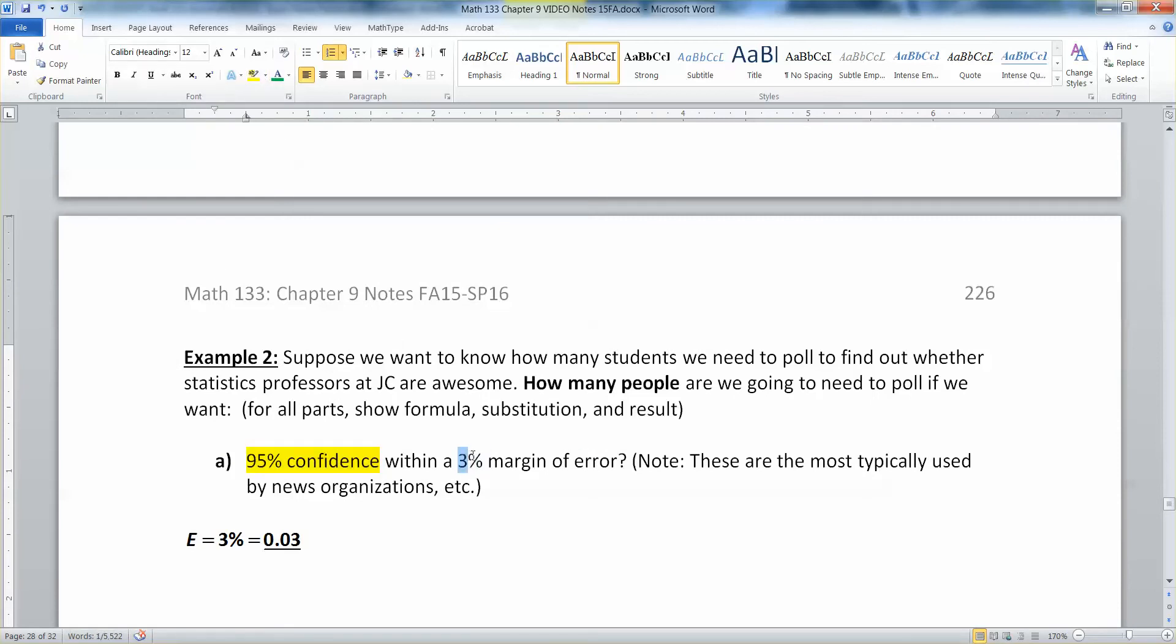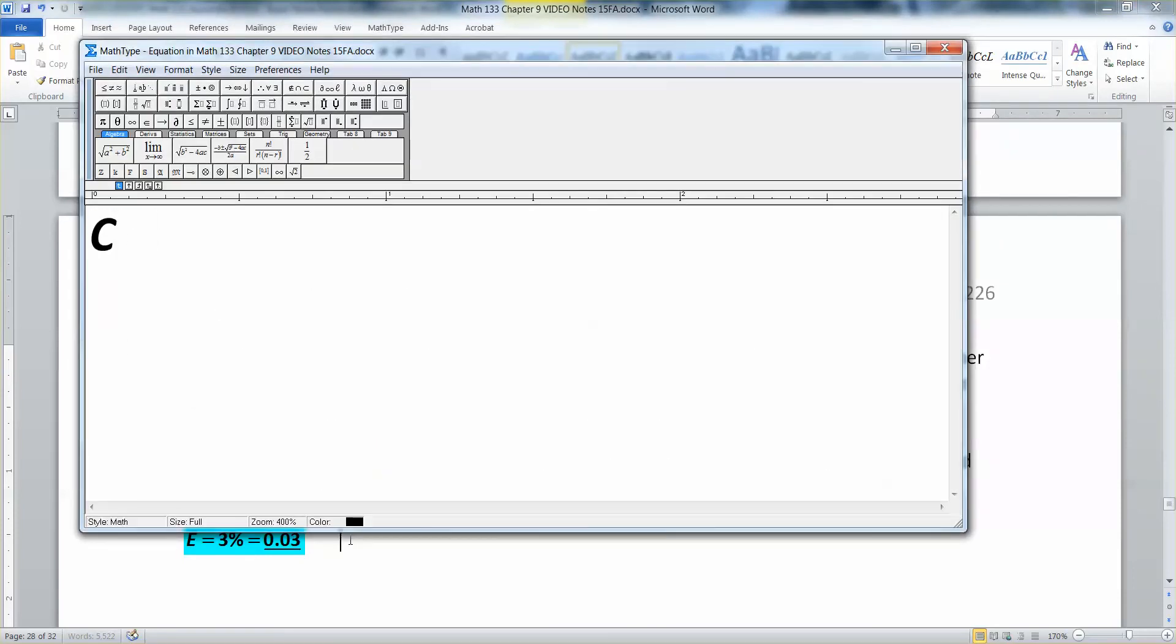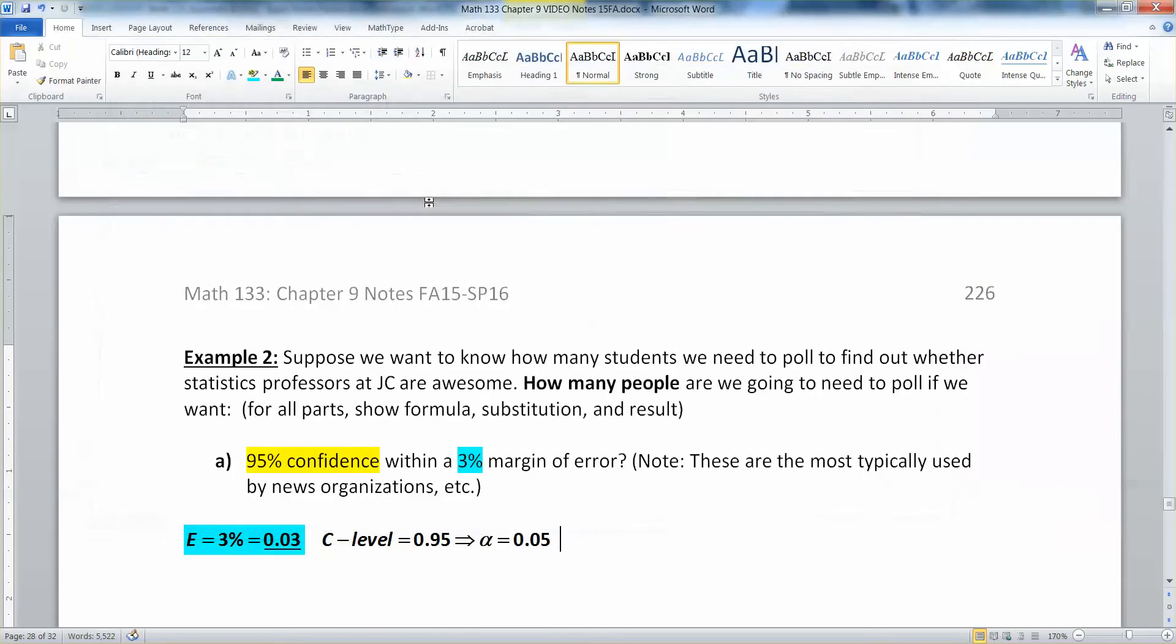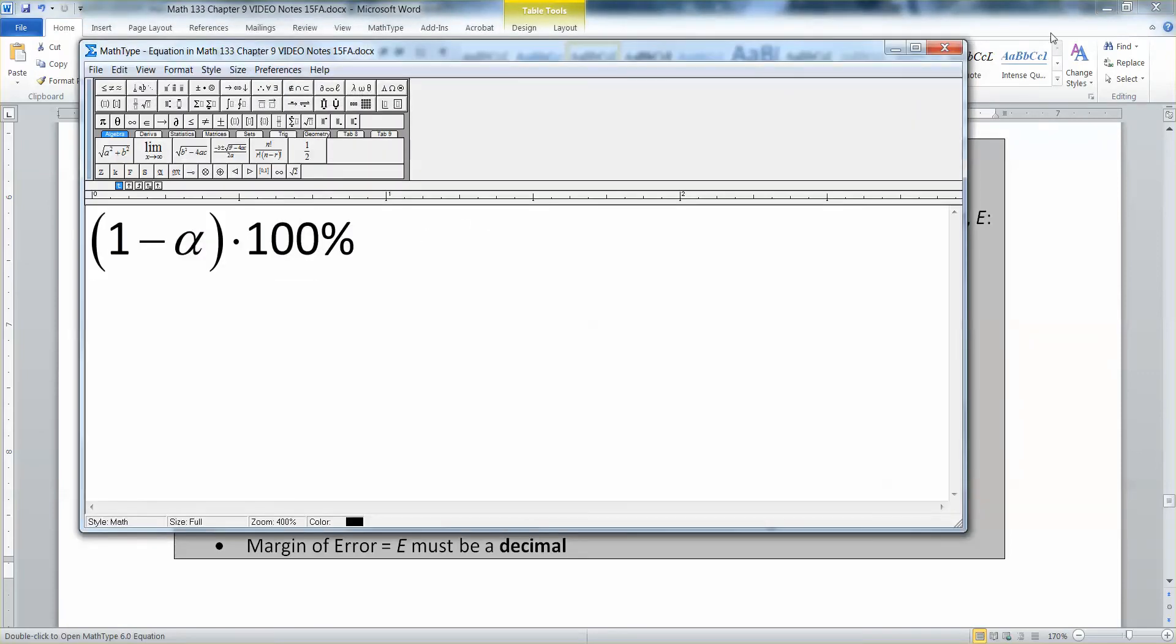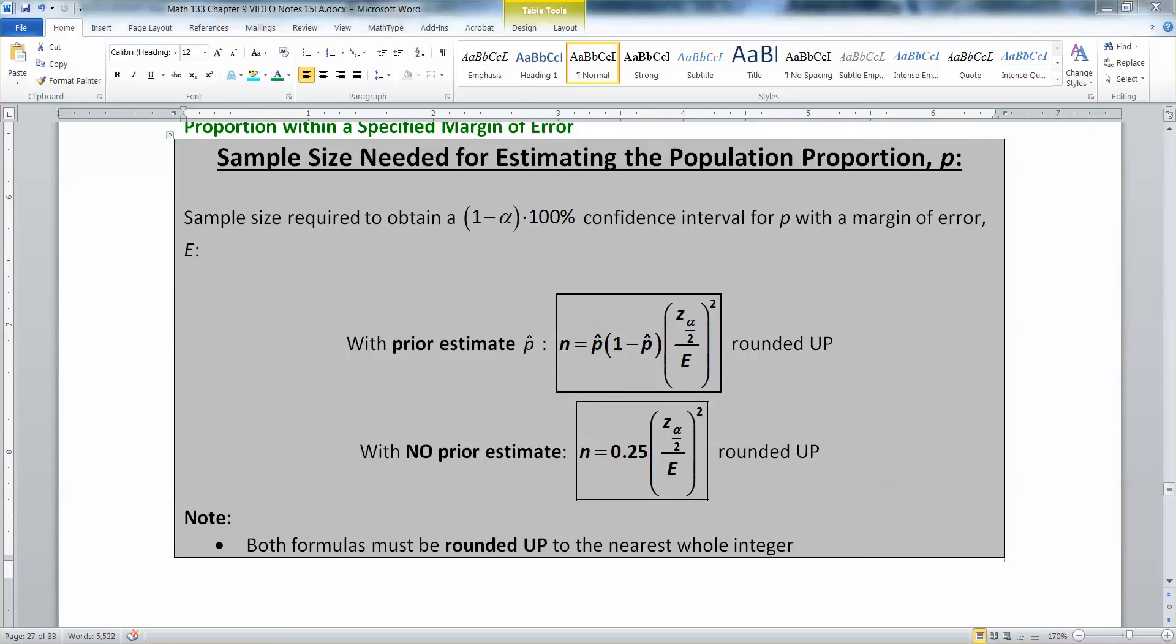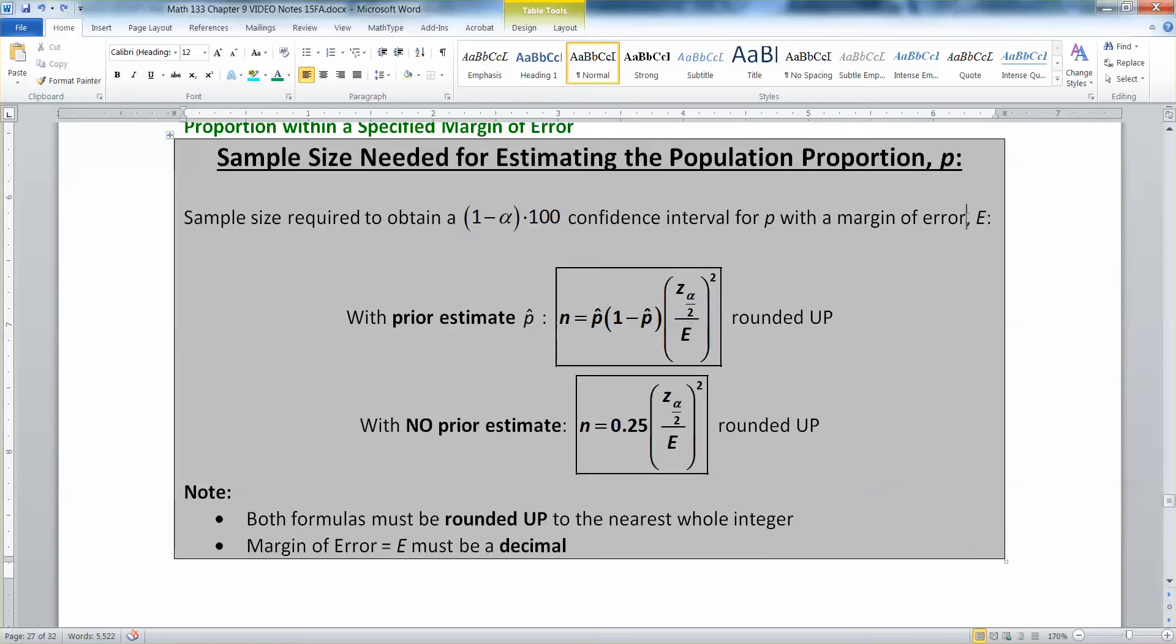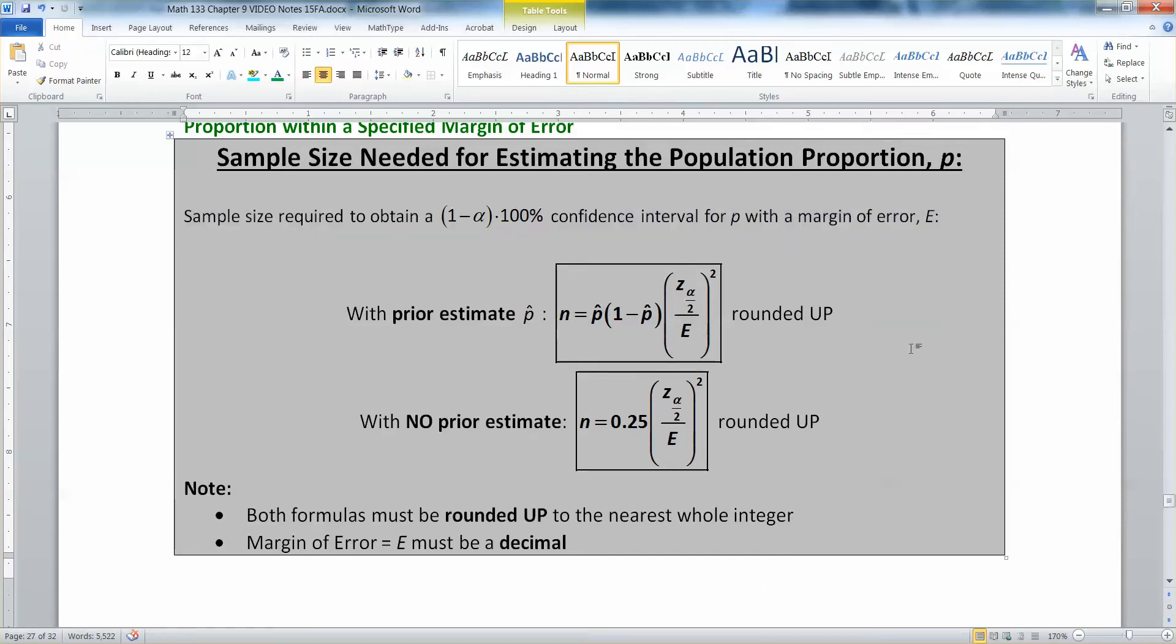That means that our alpha is 0.05, because remember, they're complements of each other. And it's right in the formula, right here. See that? 1 minus alpha times 100%. There should be 100% on that confidence. I didn't do it because I didn't want error to get popped down to the bottom. So it's 1 minus alpha times 100%. I changed my font size and squeezed it in there.